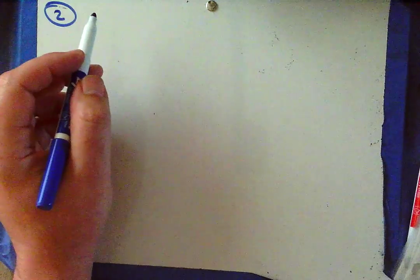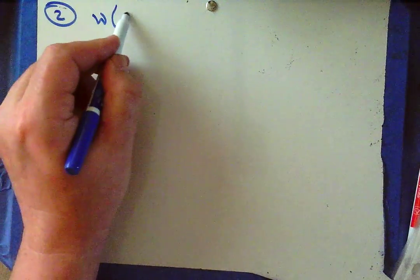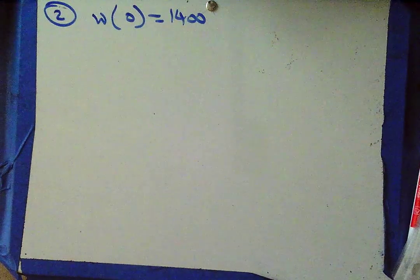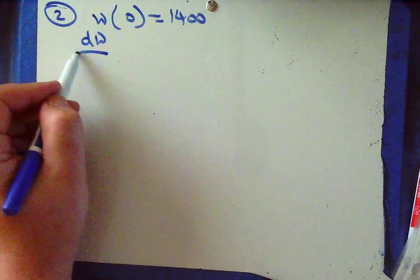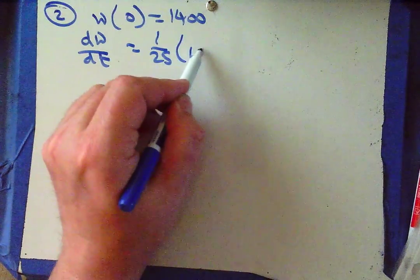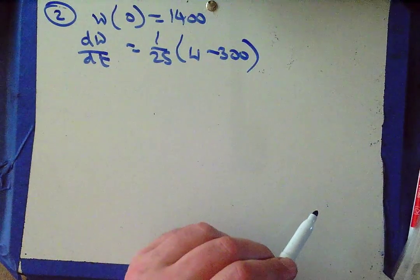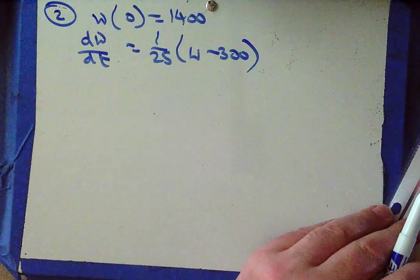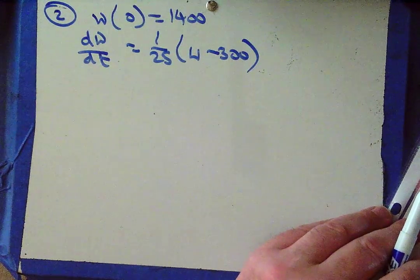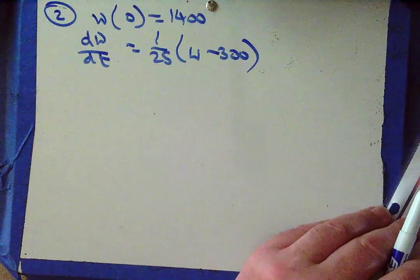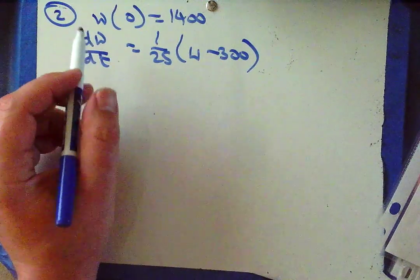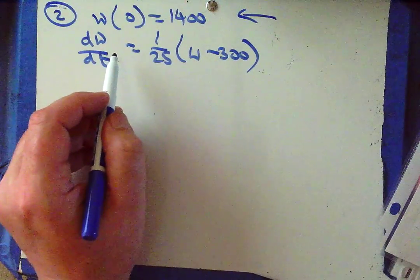Problem number two. Beginning 2010, the landfill contained W(0) equals 1400 tons. It's an increasing function because we just create more and more waste. dW/dt equals 1/25 times (W minus 300) for the next 20 years. Part a says to use the tangent line to approximate the waste at the end of the first three months of 2010. A tangent line needs a point and a slope at that point.